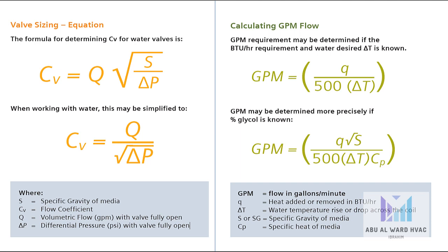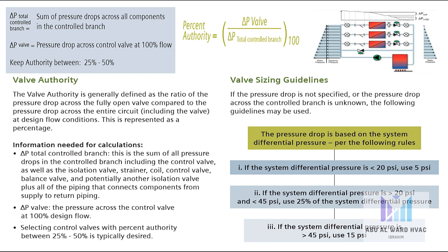We can also calculate GPM for water as: GPM equals Q divided by 500 multiplied by ΔT. If we have another material such as glycol, GPM is calculated as Q multiplied by the square root of S, divided by 500 times ΔT times Cp.